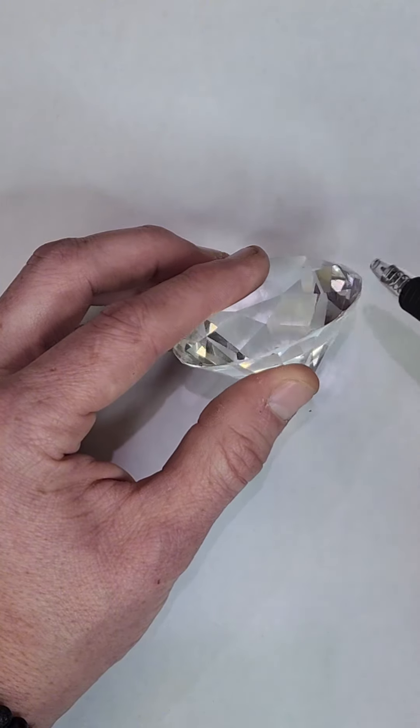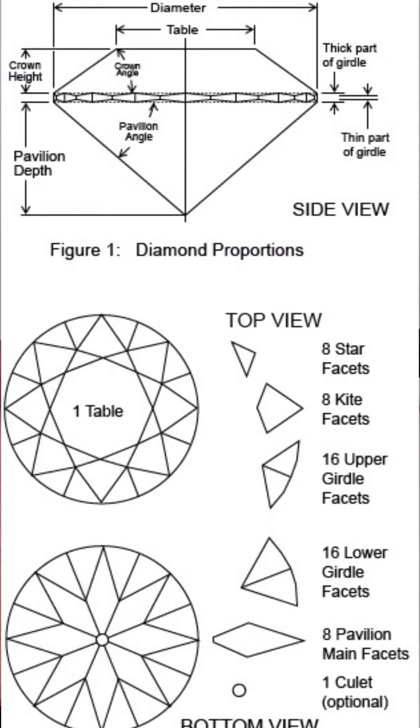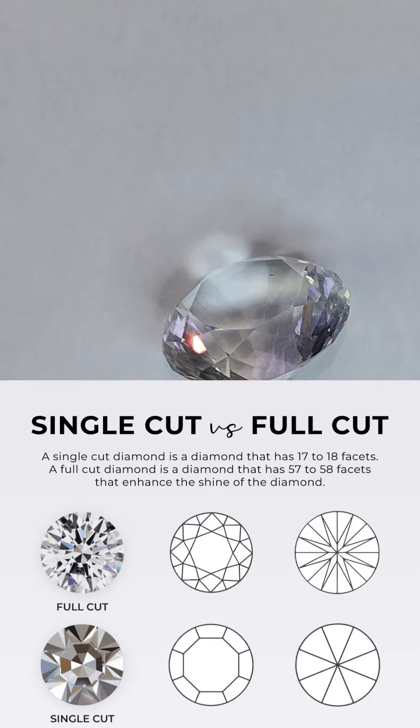We also have all the flat cuts on a diamond, those are called your facets. Now a diamond facet is a flat surface on the shape of a diamond. Every diamond possesses multiple facets that enable it to absorb and reflect light.